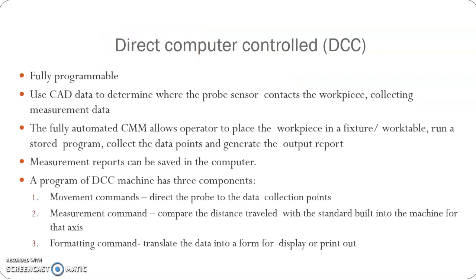In direct computer controlled or DCC, all the movements and all other functions are controlled by computer only. No manual intervention is there. Here we are using CAD data that was previously made. CAD data is fed to the machine and that will determine the path of the probe. The probe sensor will move and contact the workpiece surface, collecting measurement data. Everything will be controlled by the computer.